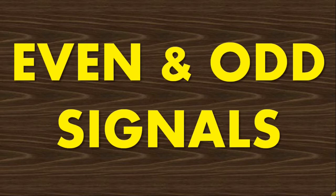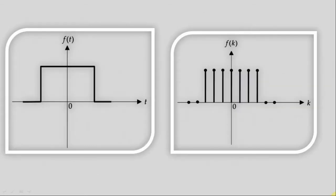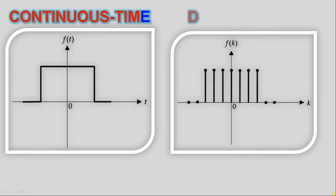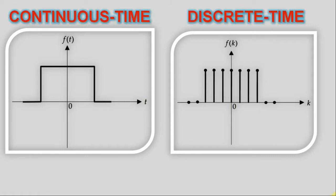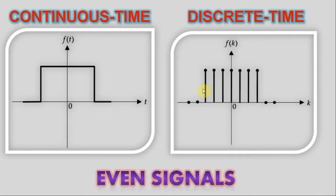In order to understand the even and odd classifications of the signals, first consider the figure shown on your screen. The signals F(t) and F(k) shown in this figure are continuous time and discrete time signals respectively. However, one thing is common in both signals — you may observe that these signals are symmetrical about the vertical axis or time origin. Such signals are said to be even signals.